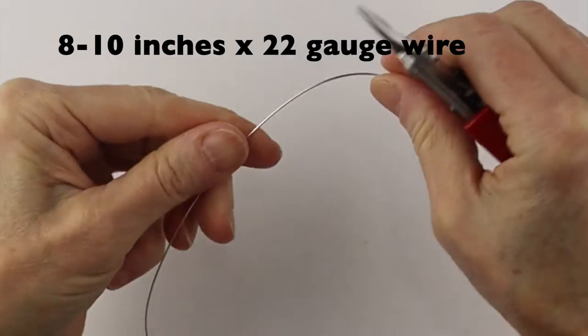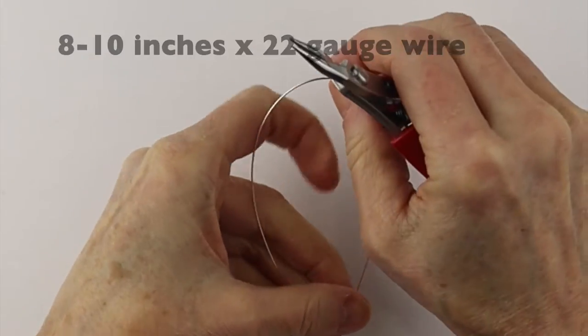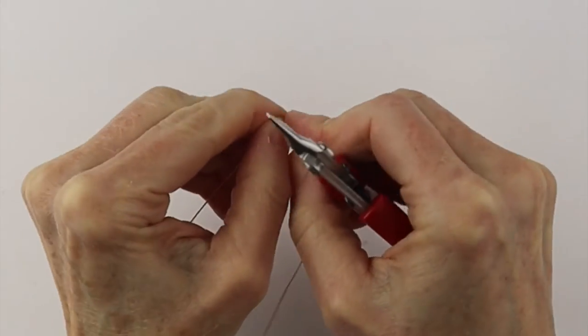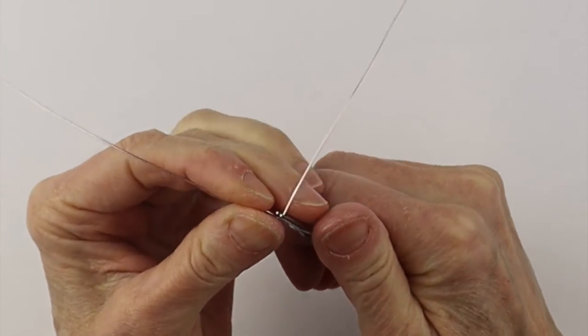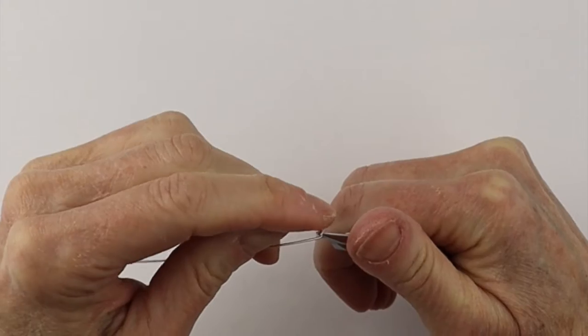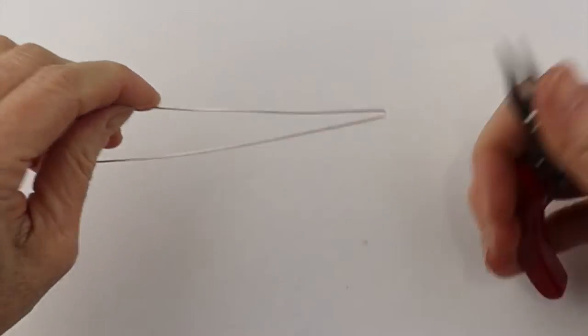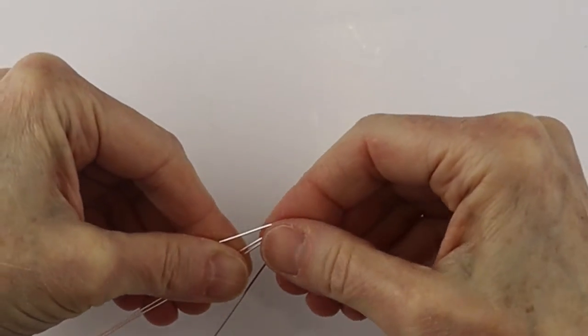For the simple wire one, we're going to take about 8 to 10 inch pieces of 22 gauge wire and fold them in half. So then we'll just hold the middle section with our round pliers and bend the wires so they're parallel, and then put two of these pieces together.